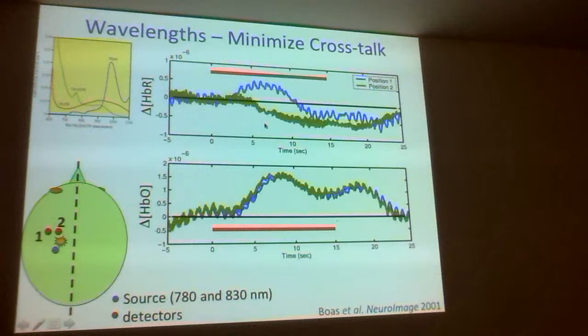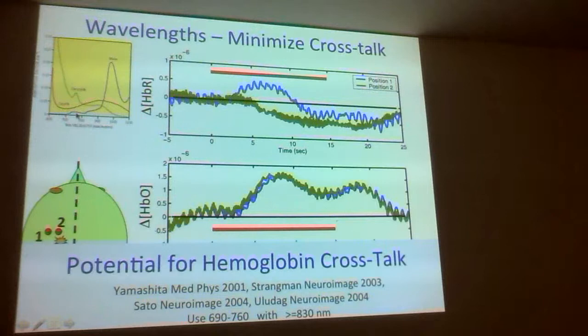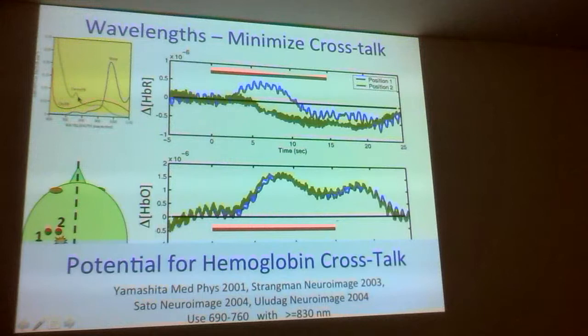The only way to reduce that crosstalk effect is to change your wavelengths — you had to use wavelengths with a bigger difference in the extinction coefficients of oxy- and deoxyhemoglobin. We did the theoretical analysis and suggested using 690 nanometers with 830 nanometers. Several other people did the same analysis and suggested the same thing. Now most commercial systems are using those wavelength pairs. You could also use 750 nm with 830 nm, but laser diodes at 750 are not as common as at 690.